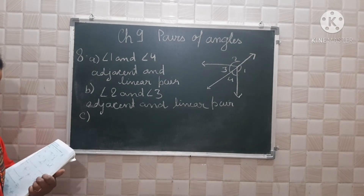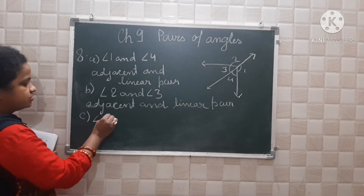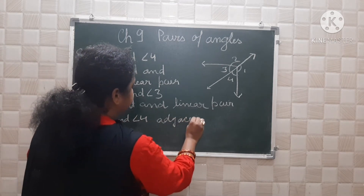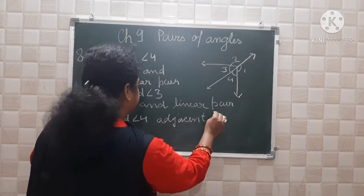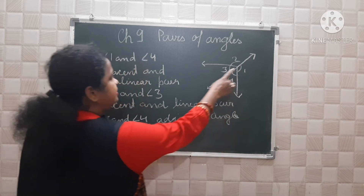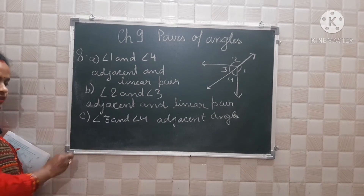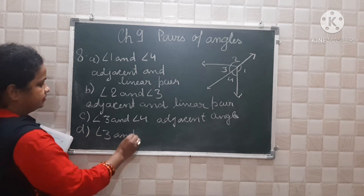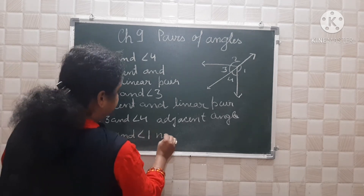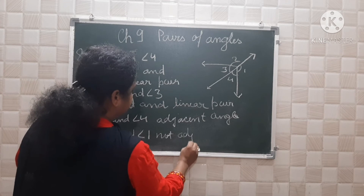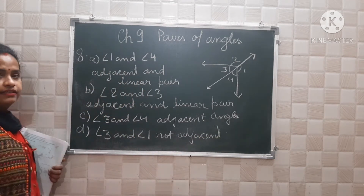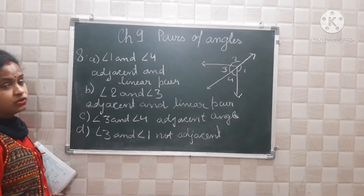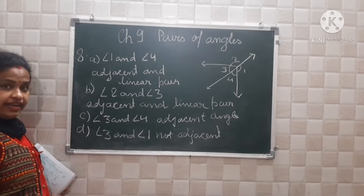For part C, angle 3 and angle 4 — this is not a linear pair; they are only adjacent angles, because they are not on a straight line. For part D, angle 3 and angle 1 are not adjacent, because they are opposite, their sum is not equal to 180 degrees, and they are not close to each other.